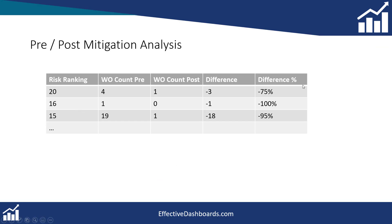This is the table we want to display. We want to display the risk ranking — so that is going to be 20, 16, 15, 12, 10, etc. Next to each one of these we want to show the work order count pre-risk mitigation, then the work order count post-mitigation, and then we want to show the difference. So for risk ranking 20, with four at the start, we put some mitigation in place, went down to one. The difference is three as a number and the difference in terms of percentage is minus 75 percent.